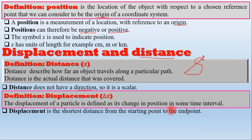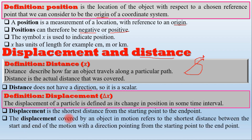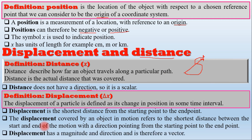The displacement covered by an object in motion refers to the shorter distance between the start and end of the motion, with the direction pointing from the starting point to the end point. The displacement has a magnitude, and its direction is called the direction of the vector — that is the displacement vector. Distance is a scalar.